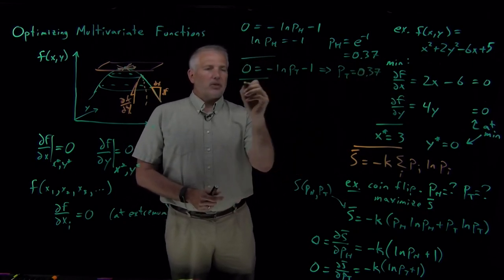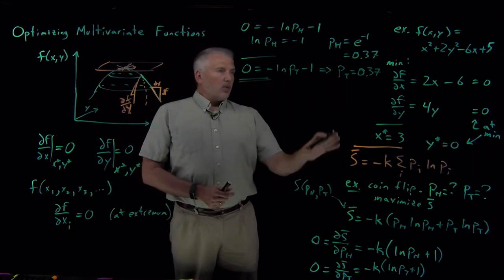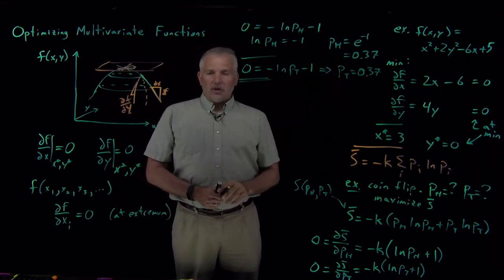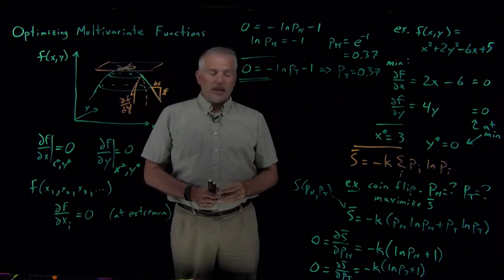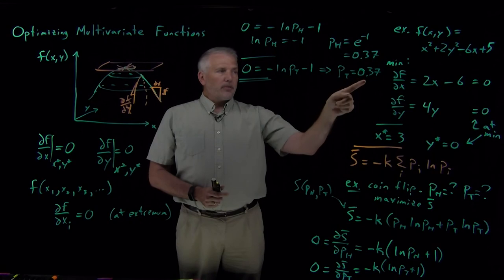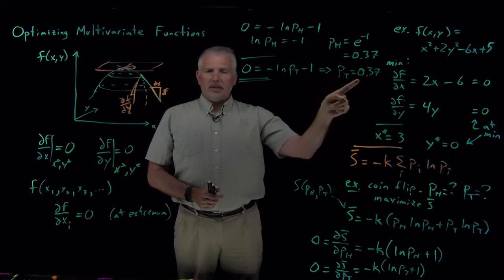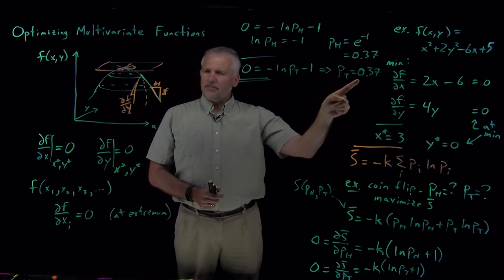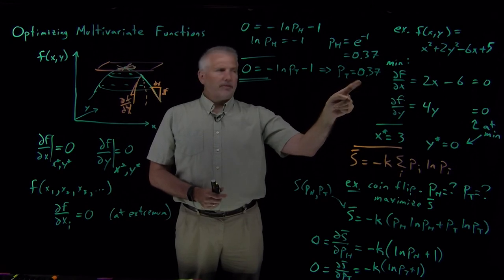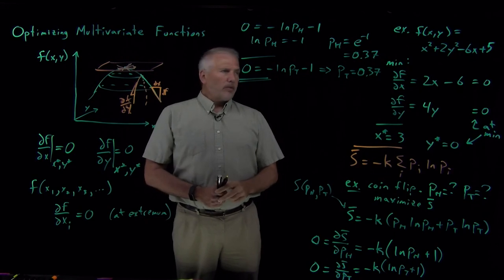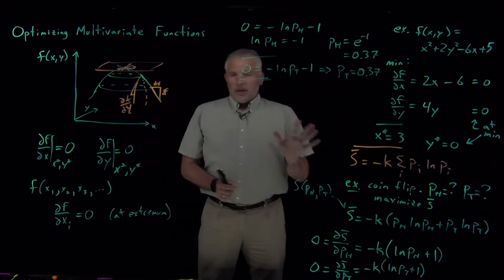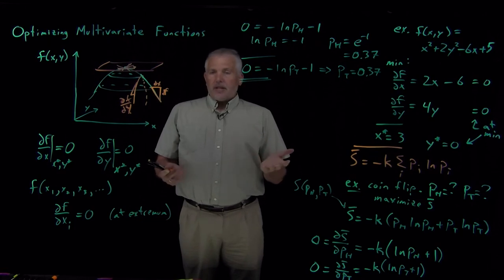So what this example has told us is, what will make the entropy as large as possible, what will make my coin flip as disordered or unpredictable as possible with the highest entropy, is if I have a 37% chance of getting heads and a 37% chance of getting tails? Not 50-50 like we expected. In fact, something seems to have gone badly wrong here.